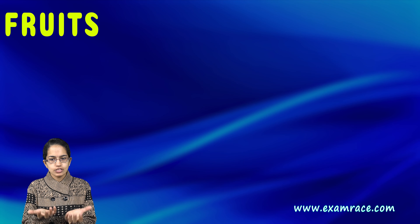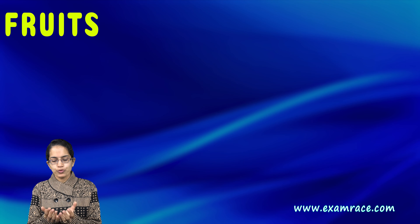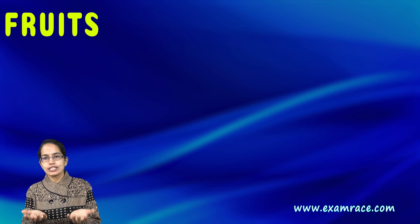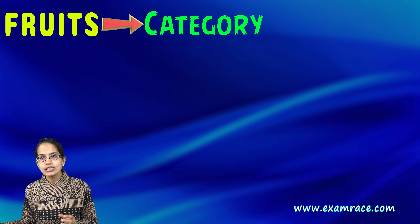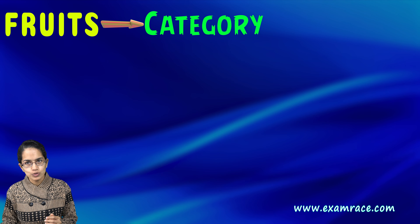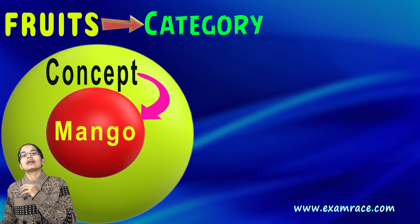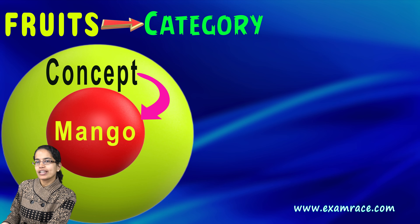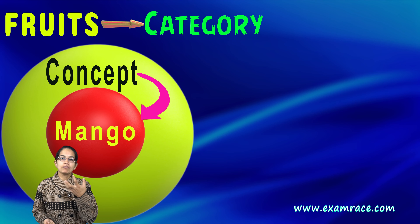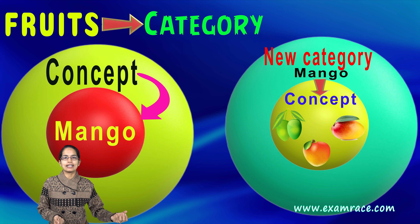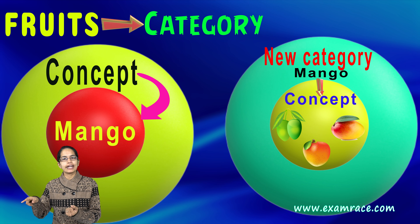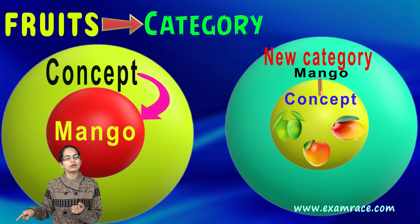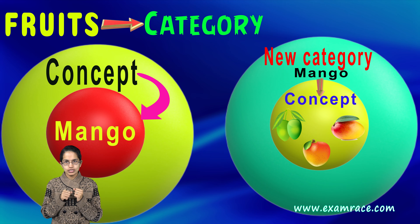I have the fruits. Now what is this concept of fruit? Fruit is a category under which I have a concept of, let's say, mangoes. On the other hand, what I can do is I can make mango now a category and I can put up different varieties of mangoes as a concept.